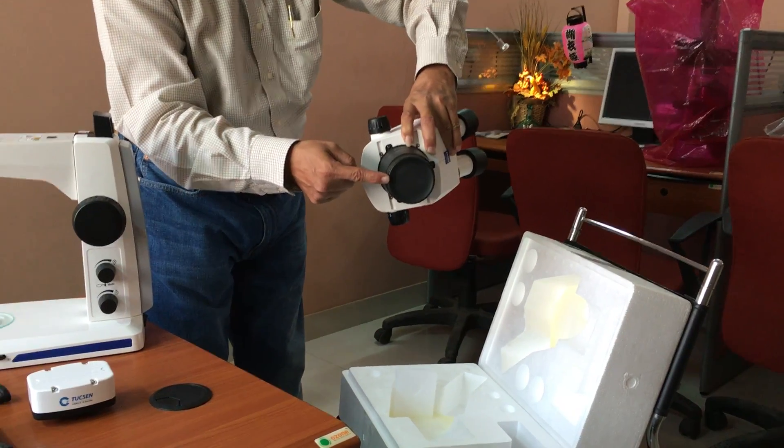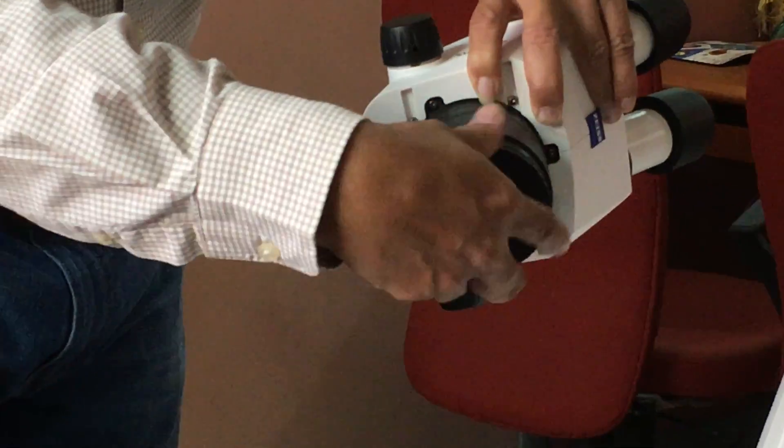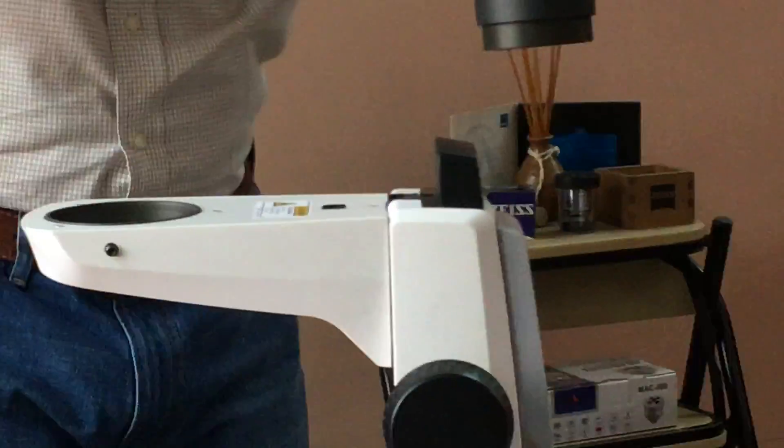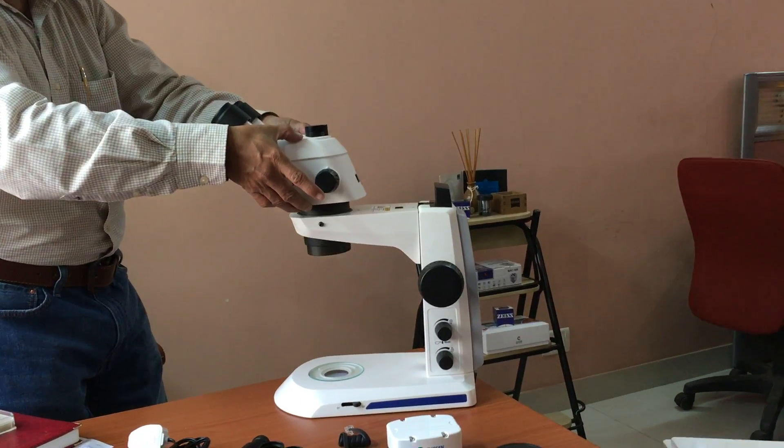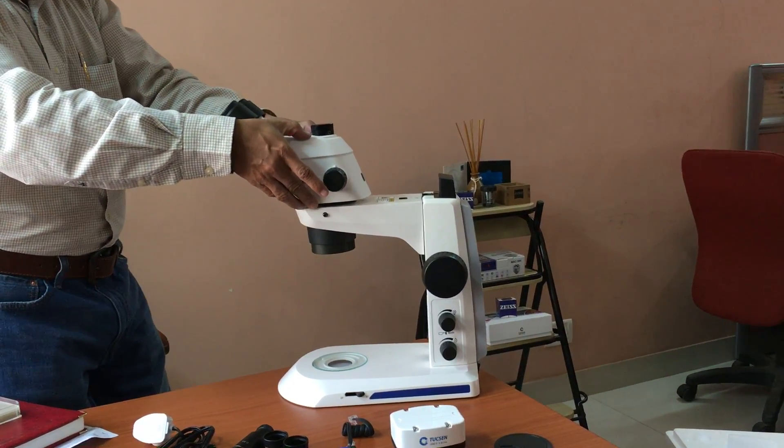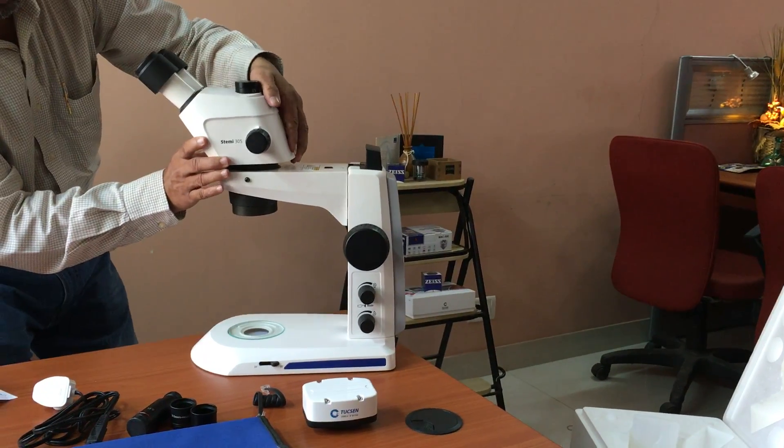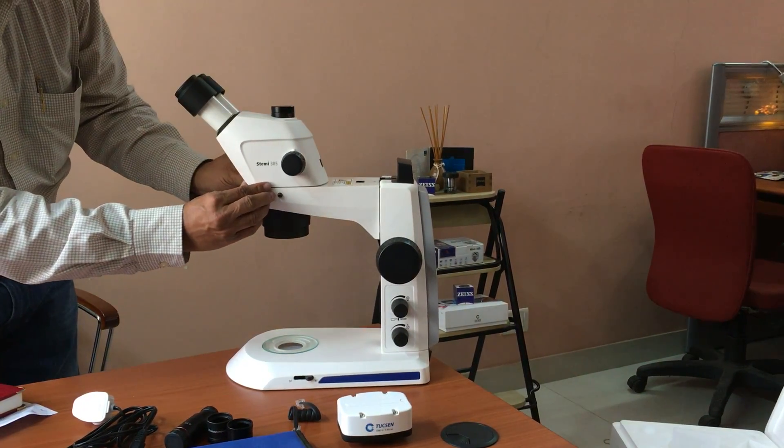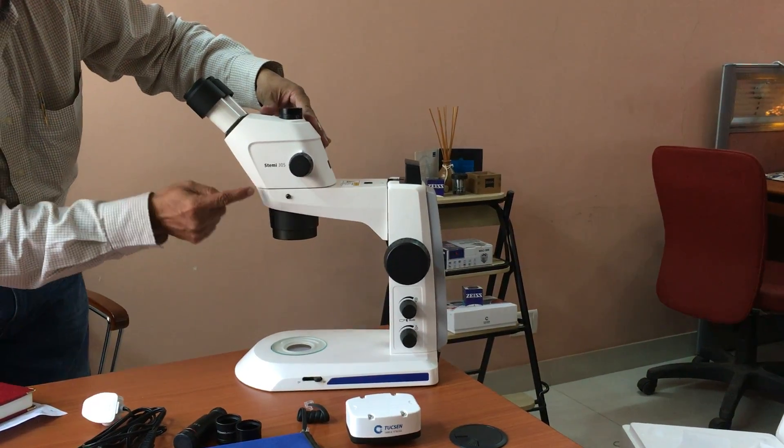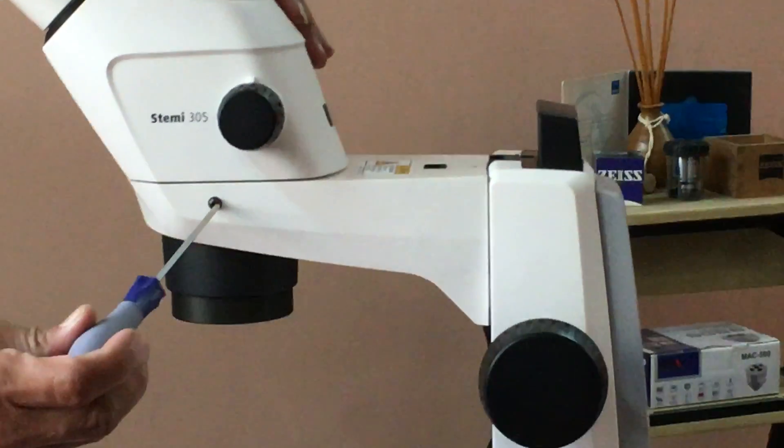Remove this transit cap. Hold the microscope body and insert it into the stand. Once it is inserted you can see the matching lines. Hand tight the allen here.